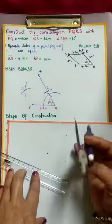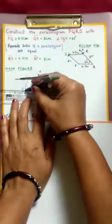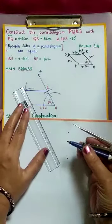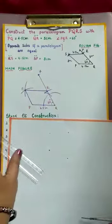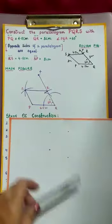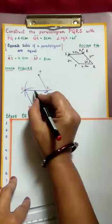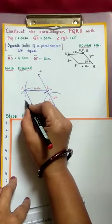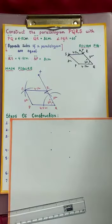Now we have to join RS and SP. Write the lengths here: this is 3 cm, this is 4.5 cm, this is 3 cm. This is your required parallelogram.